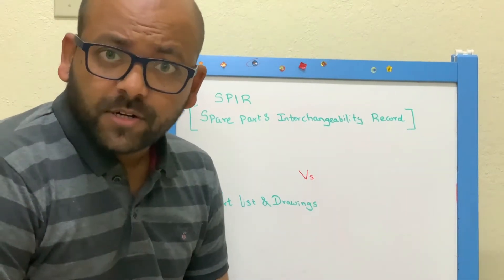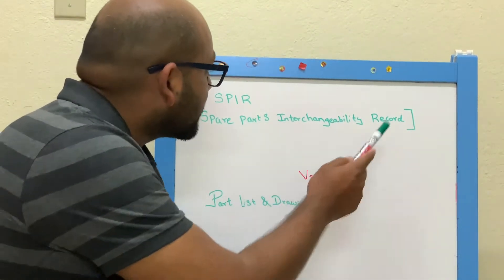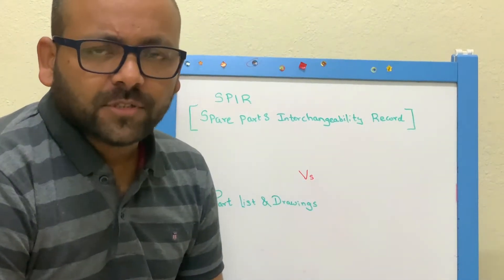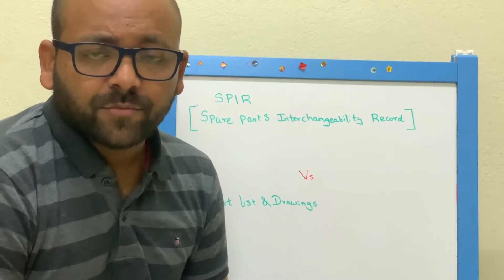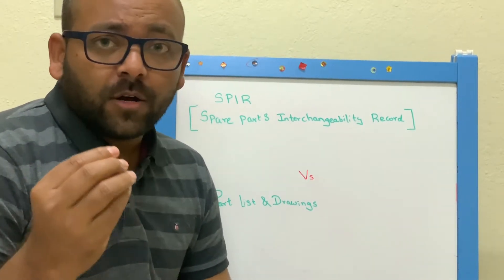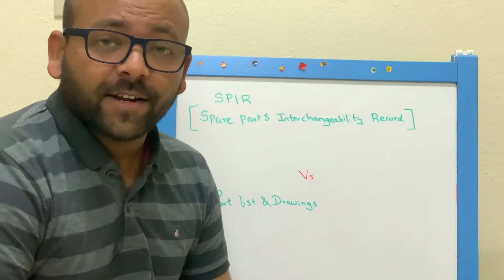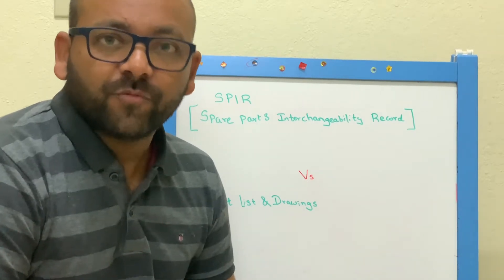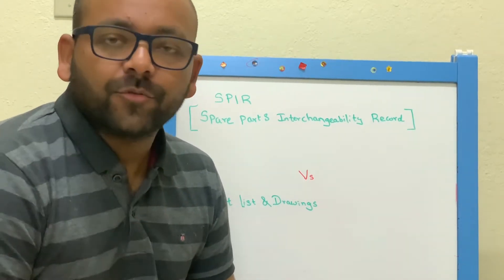The difference between SPIR — the Spare Parts Interchangeable Records — and the part list and drawings. This term is very important. As you are a new engineer who is going to join, or who is currently working in the engineering or oil and gas industries, this term must be understood well before you go into detail review.